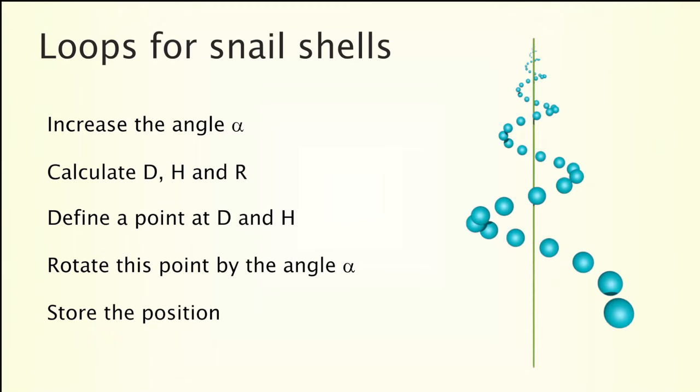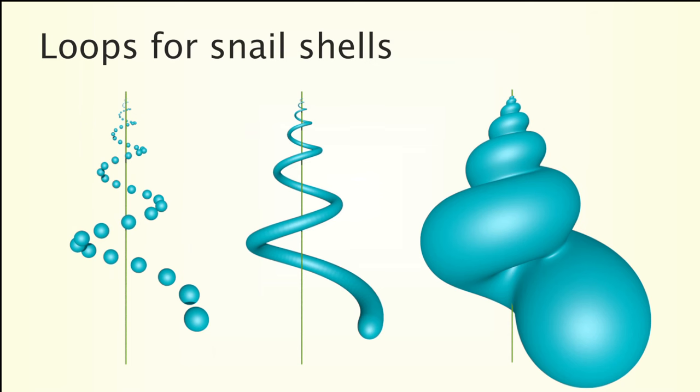If we increase the angle alpha by 30 degrees in each loop, we will obtain a structure like this. By decreasing this angle and by using additive meter balls, we obtain our first snail-like structure and by adjusting the radius, it actually starts resembling a real snail.